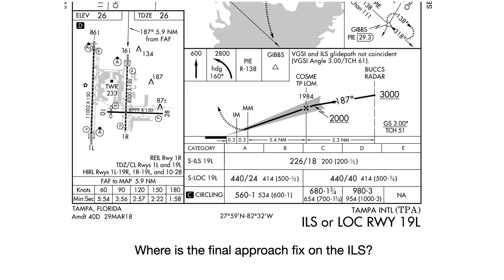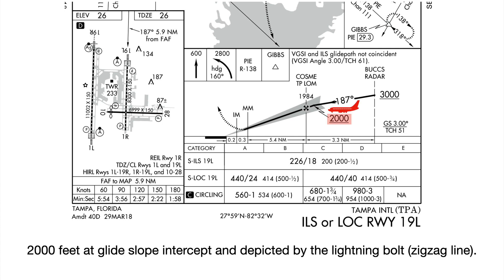The ILS localizer runway 19L — where is the final approach fix on the ILS? You guessed it right: 2,000 feet at glide slope intercept, and it's depicted by the lightning bolt, officially the zigzag line.